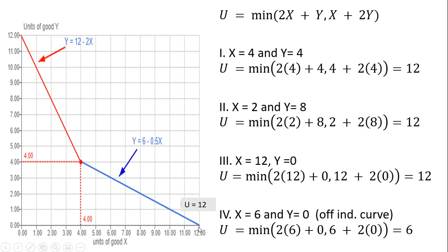Let's try the extreme point where x equals 12 and y equals 0. Plugging 12 into the utility function for x: 2 times 12 plus 0 for y gives 24. On the right-hand side, x equals 12 and y equals 0 gives 12. So the minimum of 24 and 12 is 12 — this corner point gives us 12 units of utility.